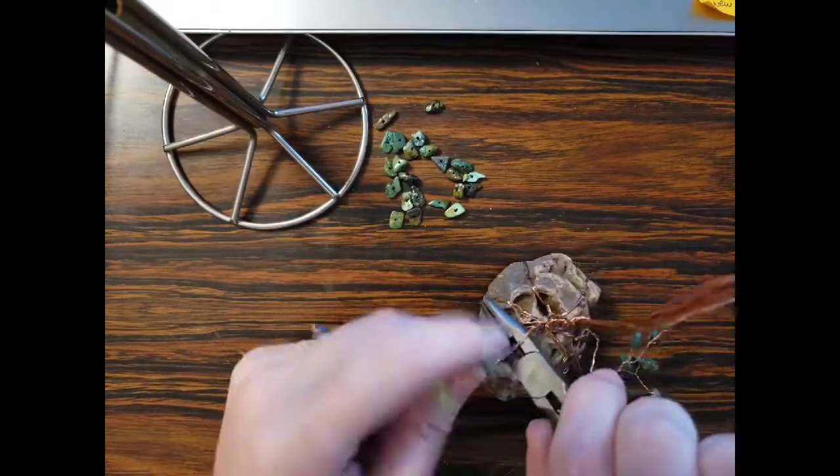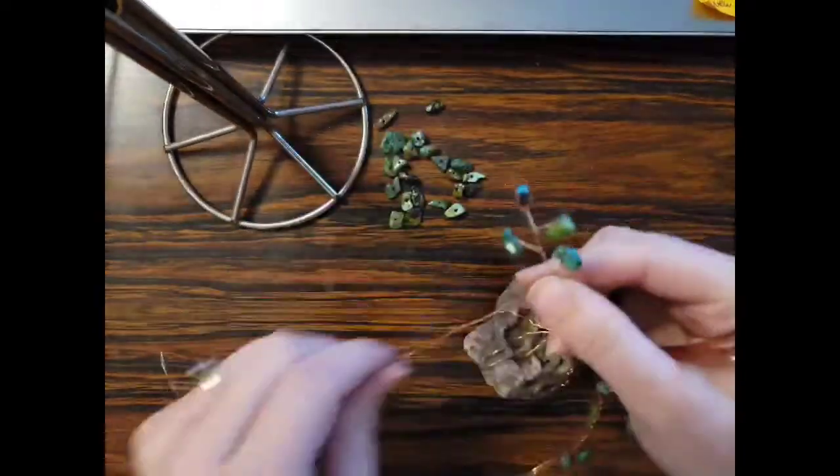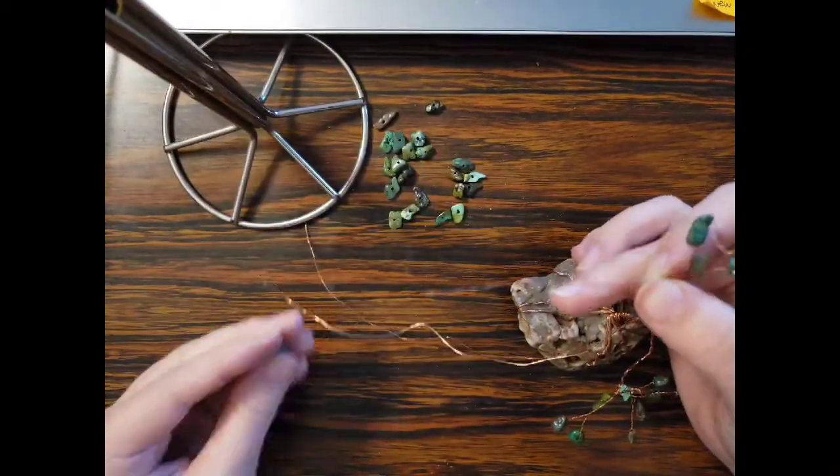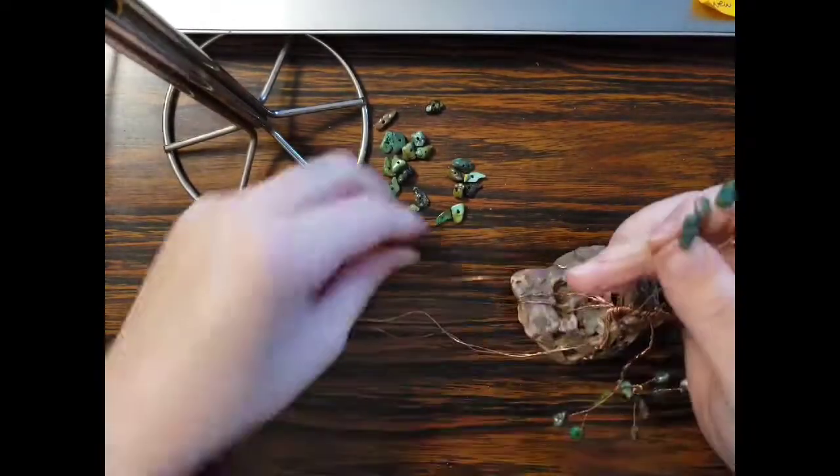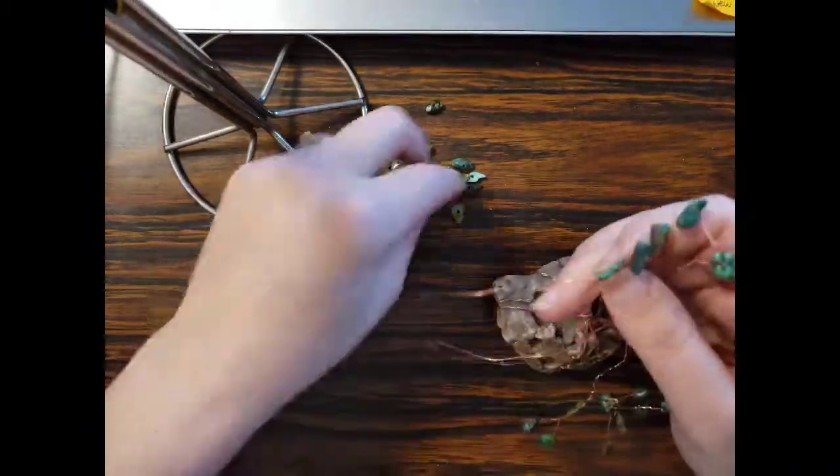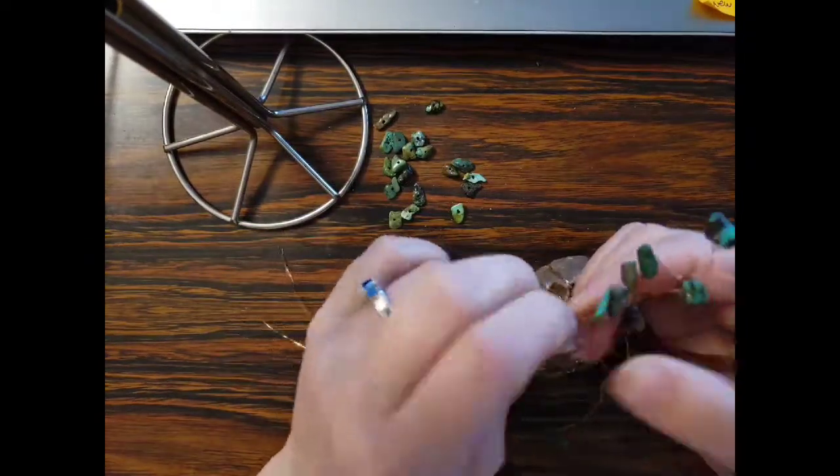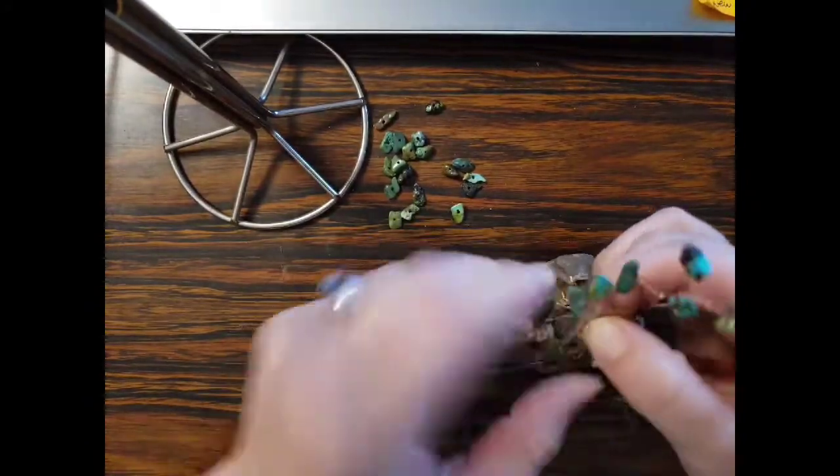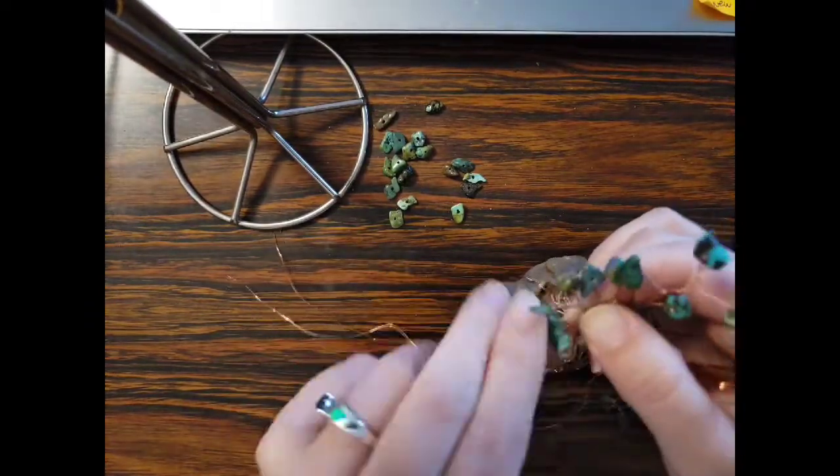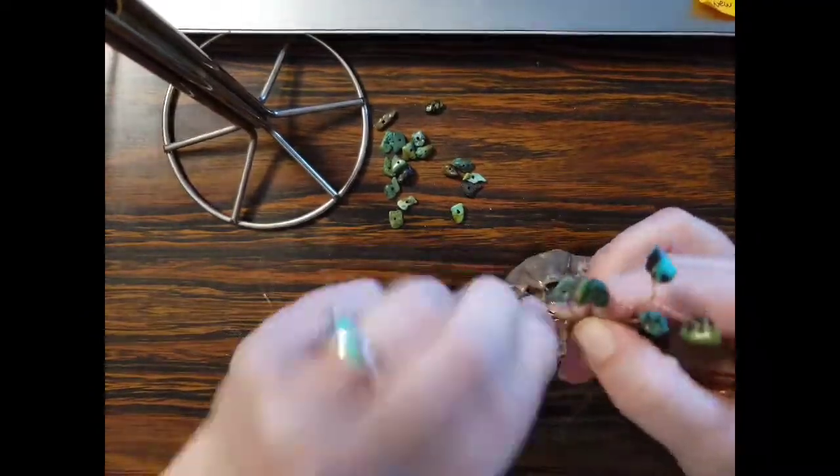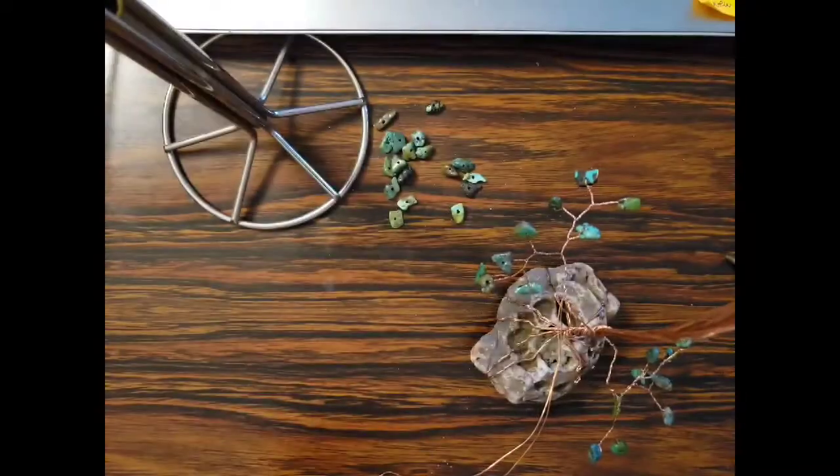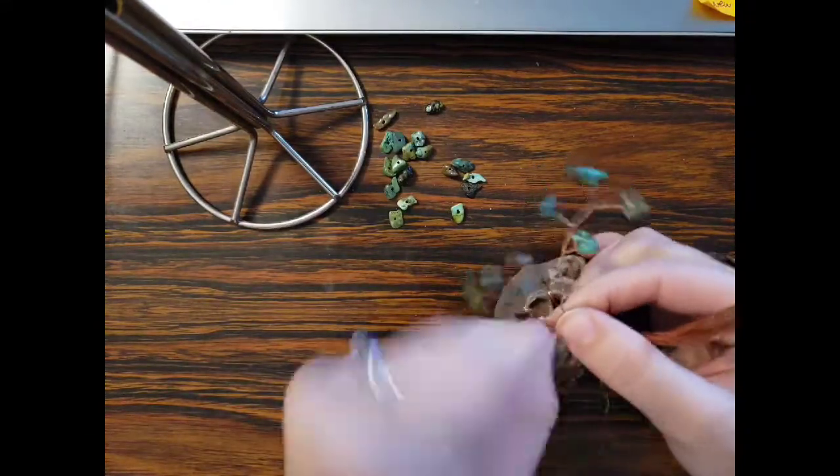And then I cut off the excess, and then I'm just tucking the end of the wire. Starting on the second section of this branch. And now we're twisting the remaining two wires to follow the second part of this singular branch.